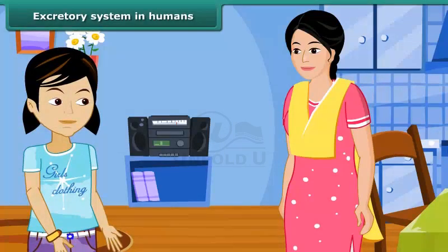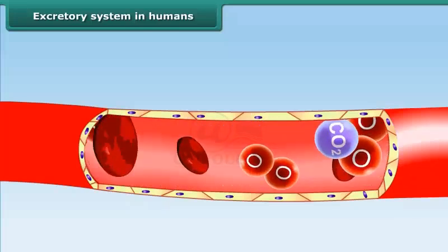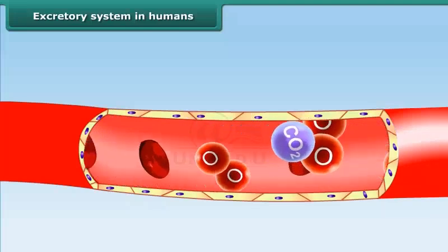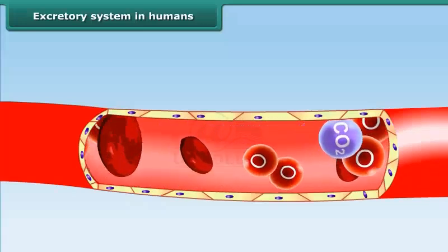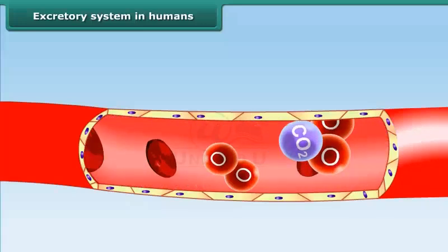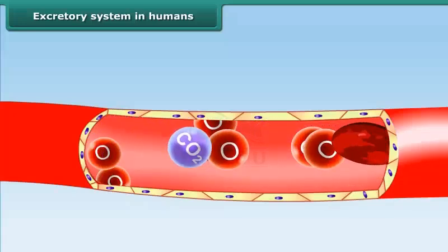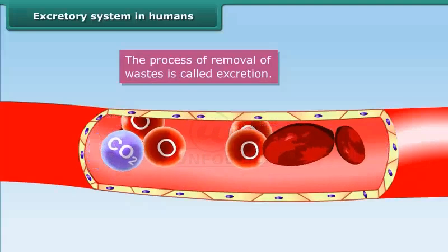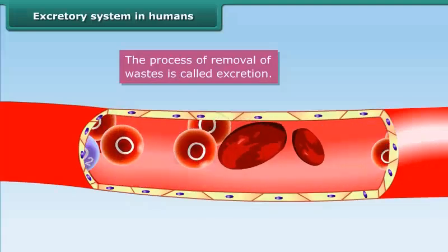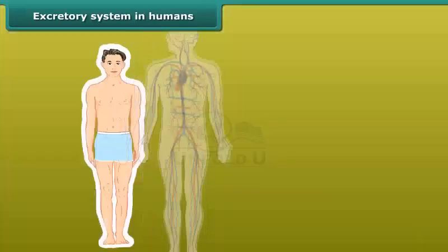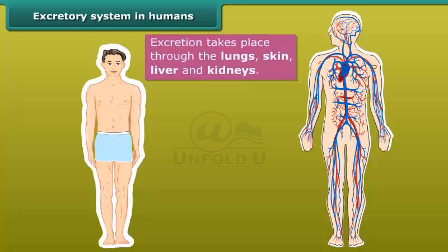Vanita comes home after jogging, covered in sweat. Her mother asks her to take a bath — sweat is a waste that must be removed from the body. Blood collects waste from different parts of the body, including carbon dioxide, water, salt, urea, and uric acid. These are the result of the metabolic activities of the body. Since they are toxic, they must be removed. The process of removal of wastes resulting from metabolism is called excretion, which takes place through the lungs, skin, liver, and kidneys.